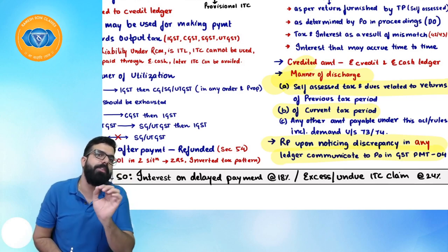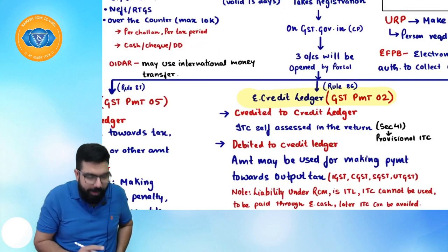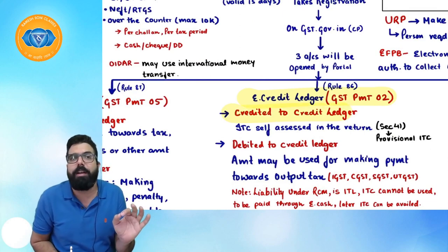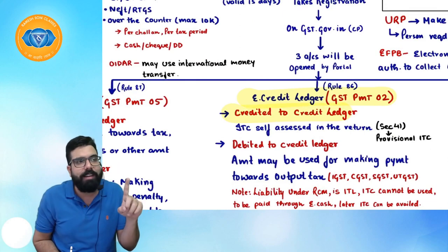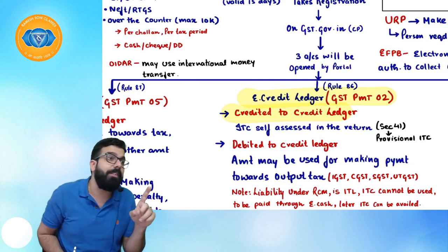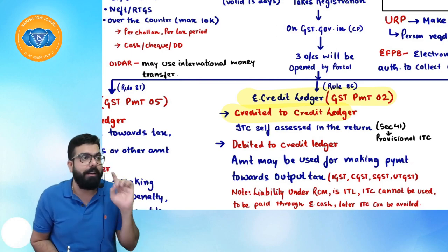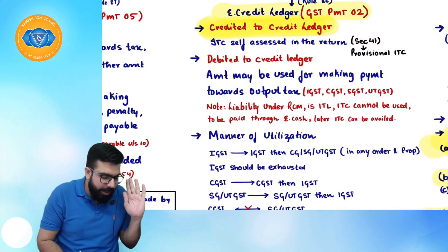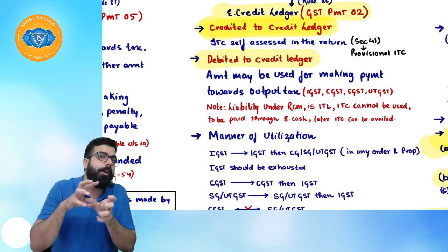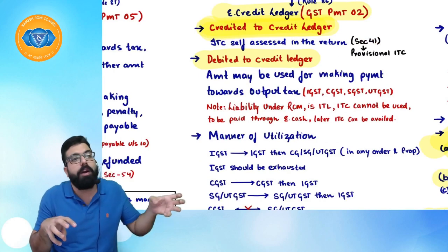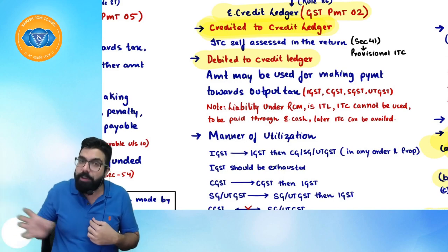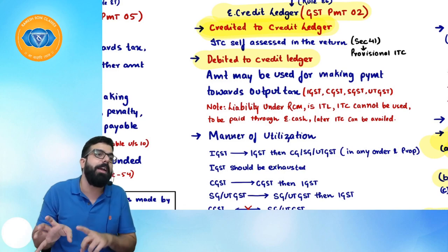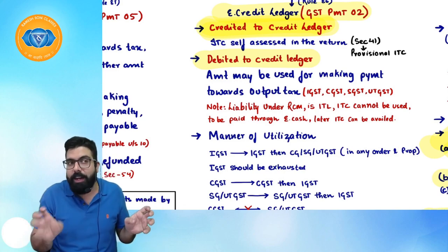E-credit ledger is governed by Rule 86. Rule 86 says whatever is your self-assessed input tax credit will be credited to your e-credit ledger. Whatever amount you use towards payment of your output tax liability will be debited. Note: input tax credit cannot be used to pay input tax liability such as reverse charge — it can only be used for output tax liability.